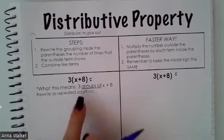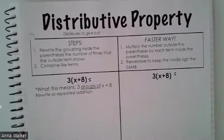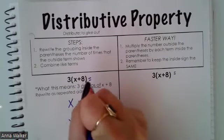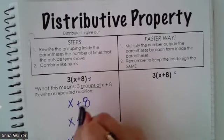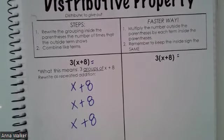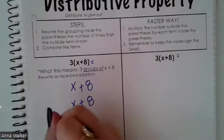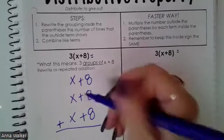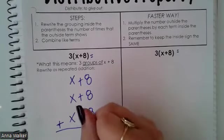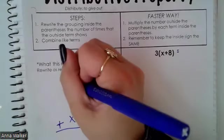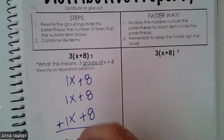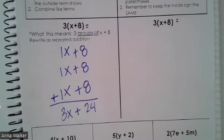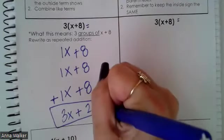So what this means is 3 groups of x plus 8. Okay, so if we wanted to write this out as repeated addition, it would look like this: x plus 8, x plus 8, and x plus 8. And so if I was to add all of these expressions up, remember I need to combine my like terms. So the like terms in this, I can add up all these eights together. That makes 24. And if I have 3 x's, remember x is the same as 1x. So 3 x's combined is 3x. So this expression, when we use the distributive property can simplify to 3x plus 24.